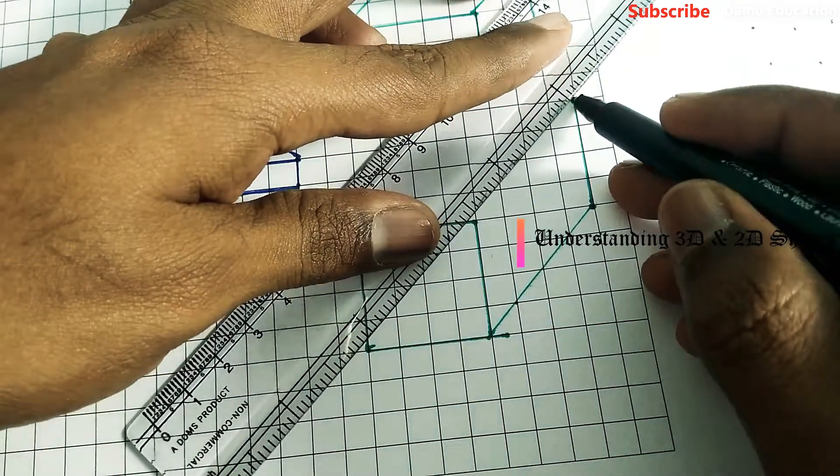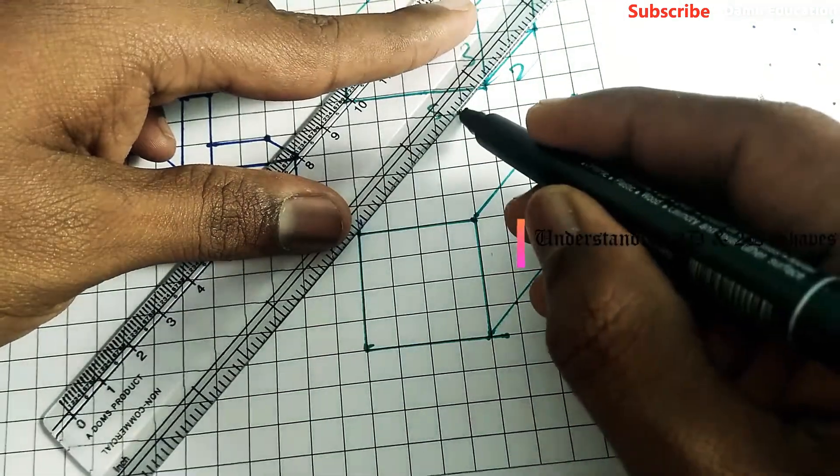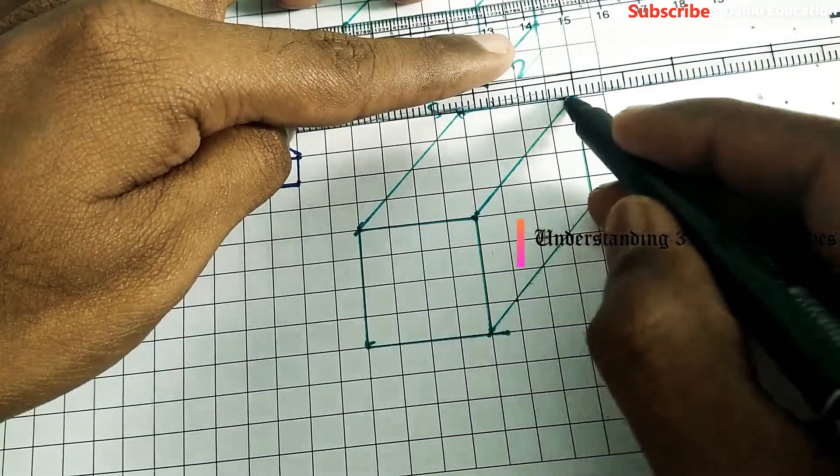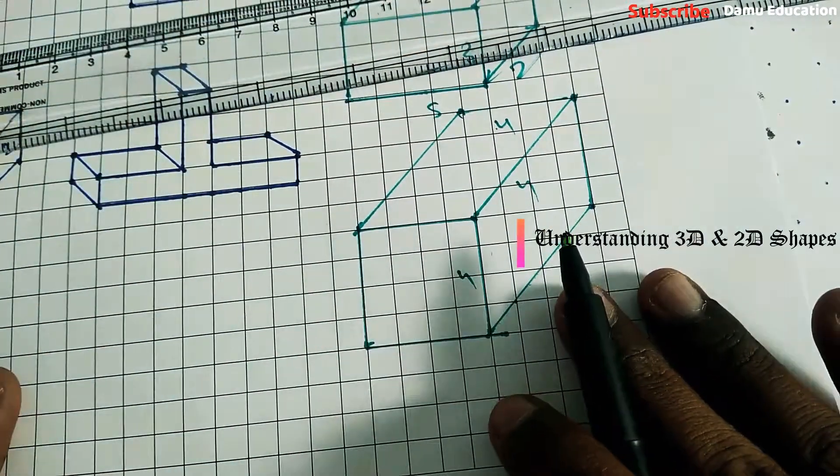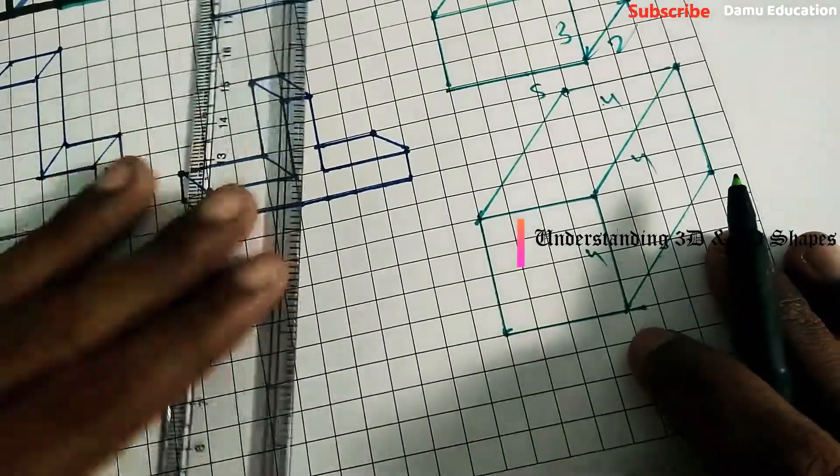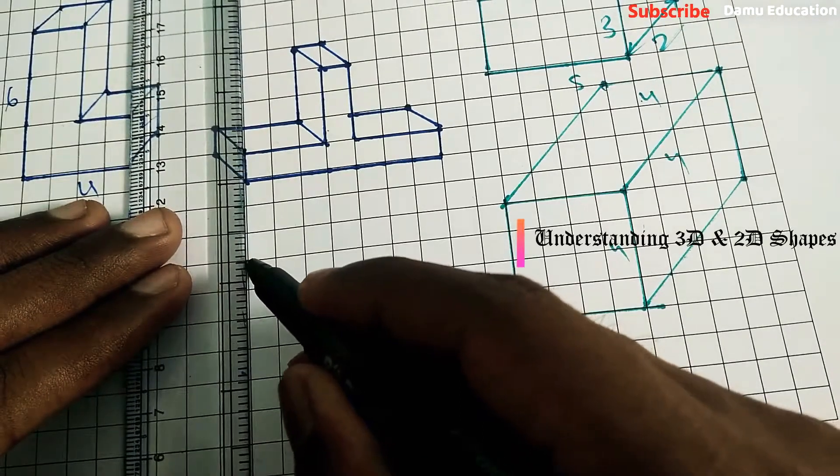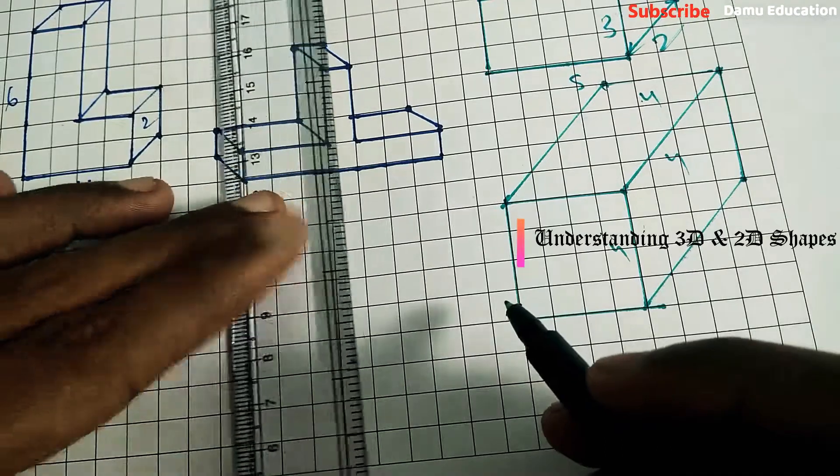So here it may be 4, from here it may be 4. This is also 4, 4, like this: 4, 4, 4. It may be like this. Or you can take another option. Let's start with 4: 1, 2, 3, 4.